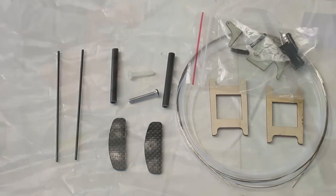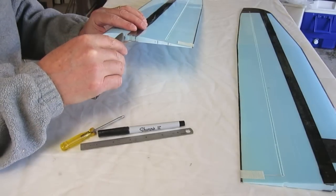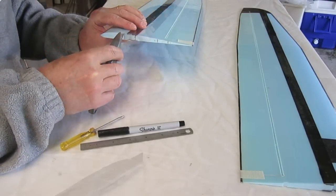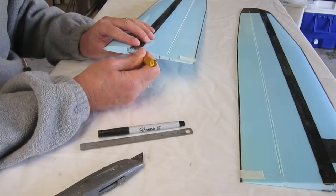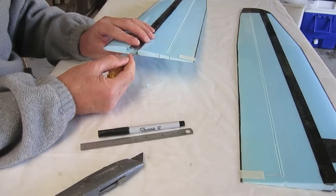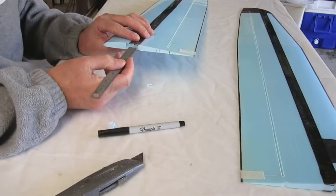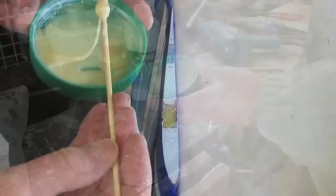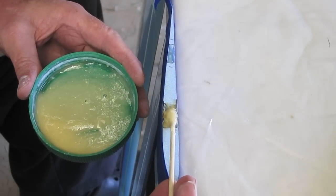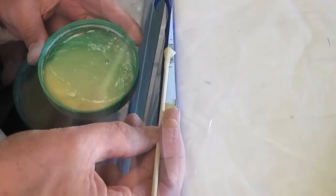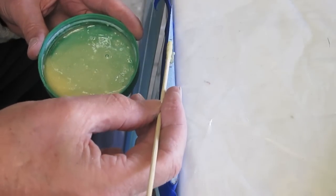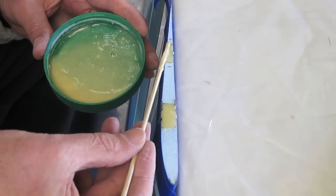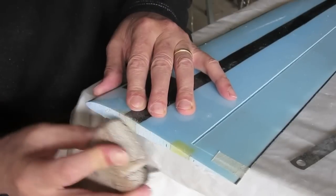First step is to create the hard points for the wing bolts. You need to gouge out some foam, 10mm deep, 25mm long around each wing bolt and fill with thickened epoxy glue. Once it's cured, you need to sand it flat again so that the wings fit nicely together.